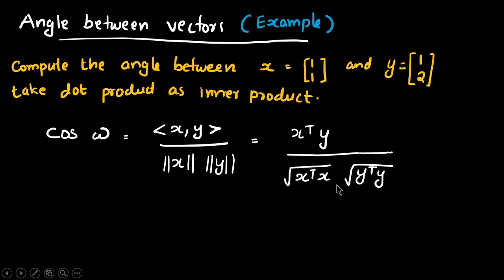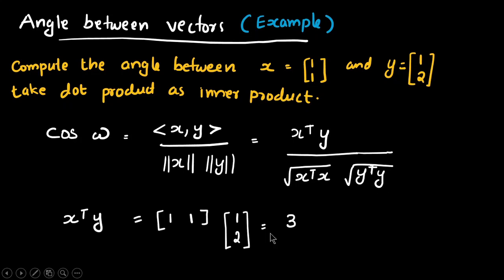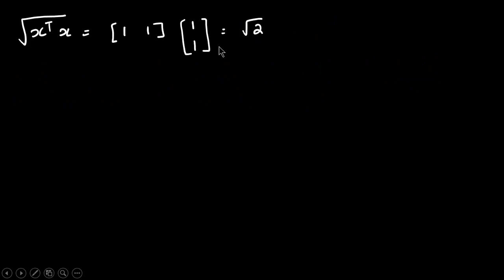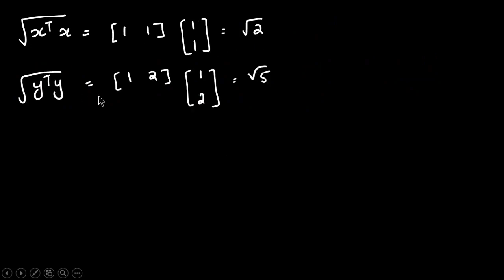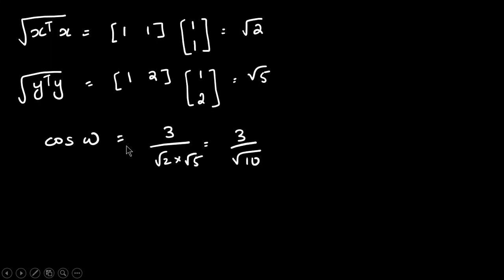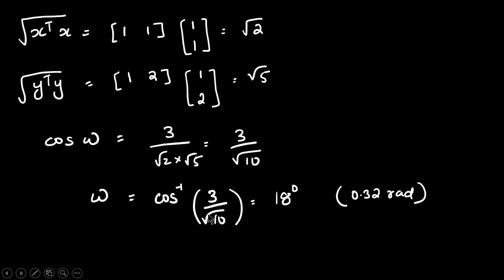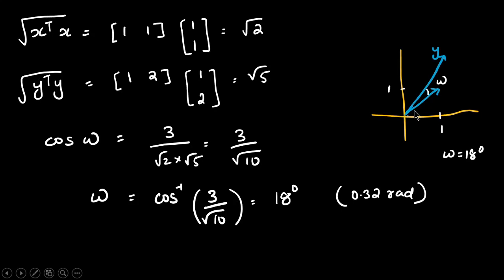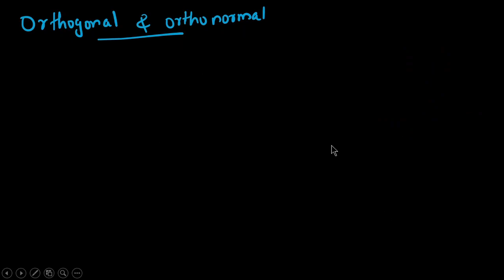We calculate x transpose y as [1, 1] · [1, 2], which gives 3. Then the norm of x is root 2, and the norm of y is root 5. So cosine omega equals 3 divided by root 2 times root 5, which simplifies to 3 over root 10. From this we find omega equals cosine inverse of 3 over root 10, which is approximately 18 degrees, or 0.32 radians. So the angle between these two vectors x and y is 18 degrees.